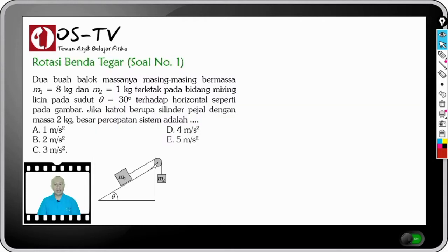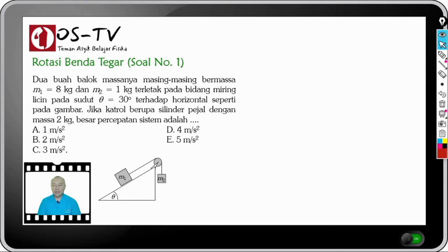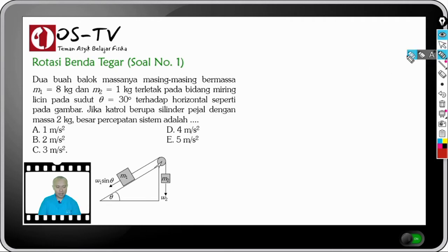Sekarang kita coba selesaikan soal tentang rotasi benda tegar nomor 1. Disini ditunjukkan bahwa 2 buah balok yang masanya M1 8 kg dan M2 1 kg terletak pada bidang miring licin pada sudut theta 30 derajat. Jika katrol berupa silinder pejal yang masanya 2 kg, maka besar percepatan sistem adalah. Sekarang coba kita gambarkan permasalahan ini ke dalam gambar dan mari kita analisa satu per satu.